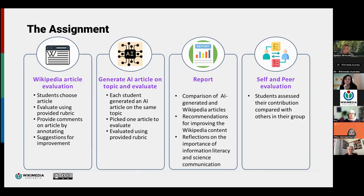In parallel, we integrated a little bit of generative AI into the assignment. Each student generated an AI article on the same topic aimed at a general audience — so each student in the group of four generated their own article. They then chose which one they thought was the best and used that same rubric to evaluate the AI article. This was really to get them thinking about the language used in both Wikipedia and AI and make comparisons between the two.